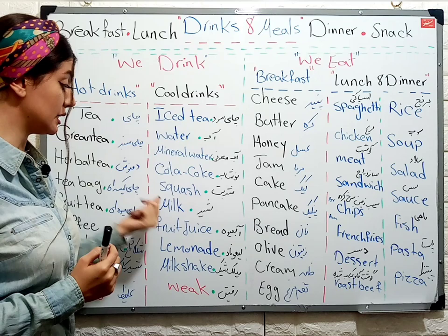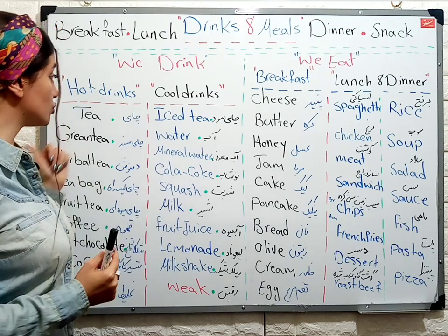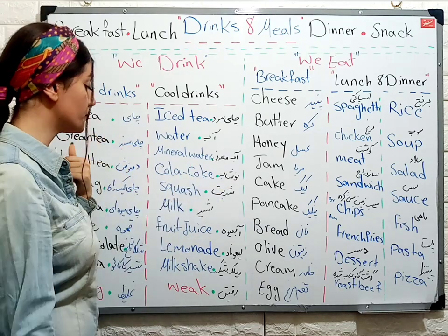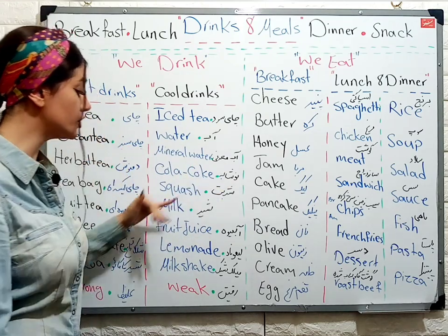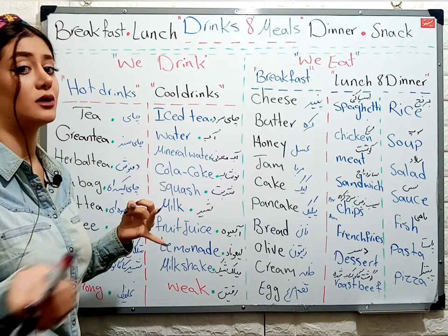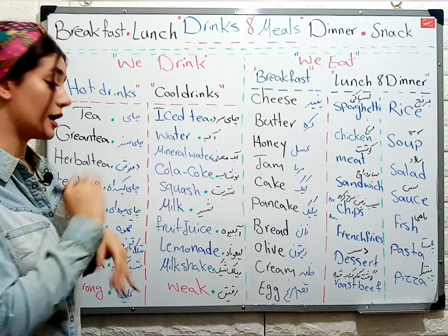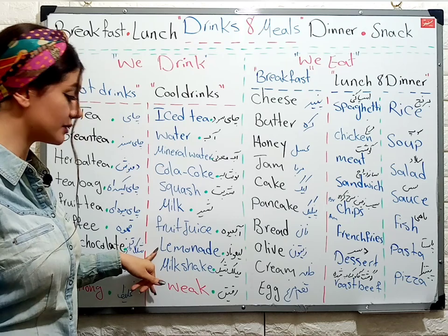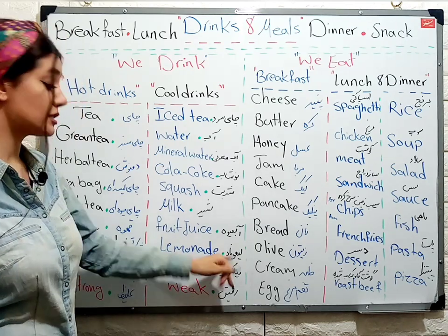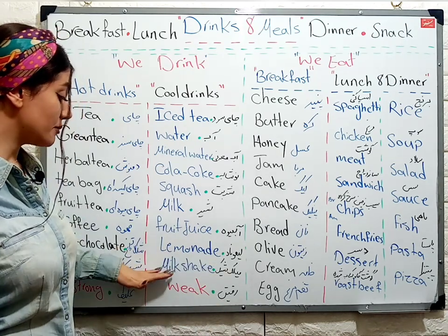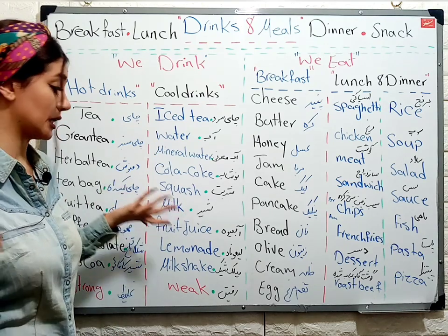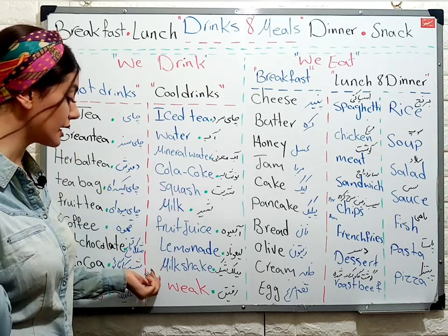Milk — شیر. Milk can be either a hot drink or a cool drink — it depends on you. Fruit juice — آب میوه. Orange juice, apple juice. Lemonade — lemonade means لیموناد. And milkshake — we call it milkshake in Persian too — همون milkshake.